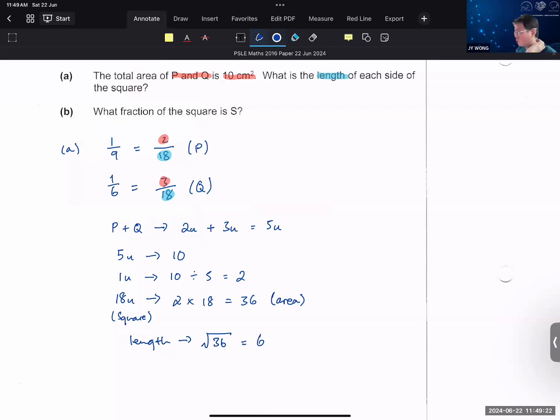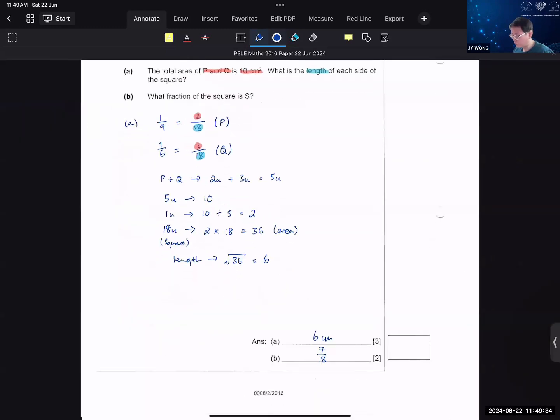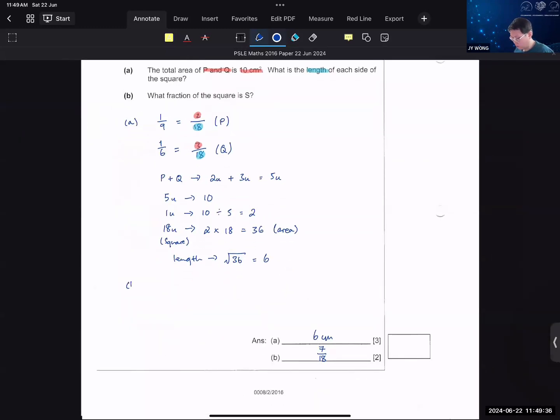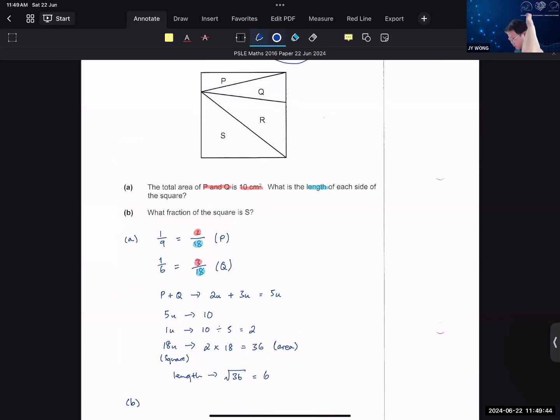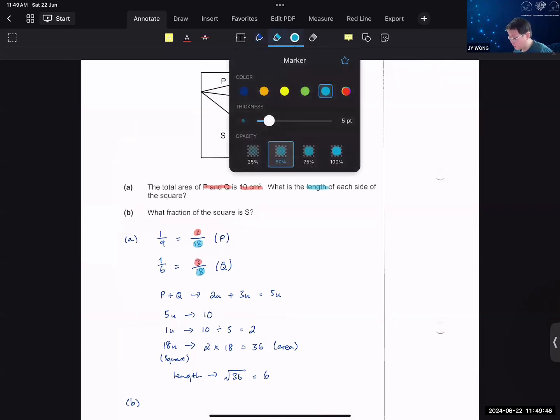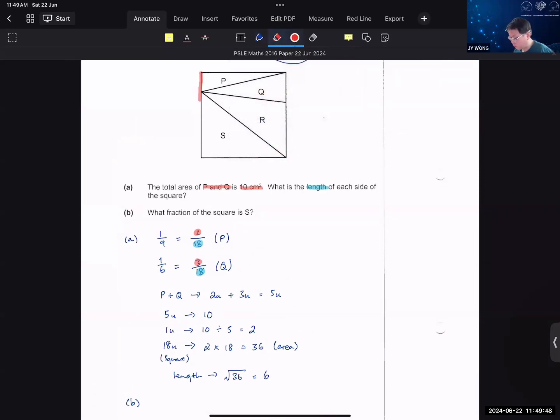Common mistake for this question is that students go and find the area, then very happy, then they write the area as the answer, forgetting that the question asks you for the length and not the area. And so, obviously, in the exam setting, they expect you to know the idea of a square root. The next part, they ask you what fraction of the square is part S. And this is where you have to understand the logic of your area of triangles.